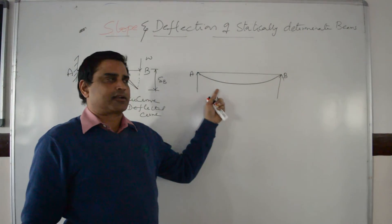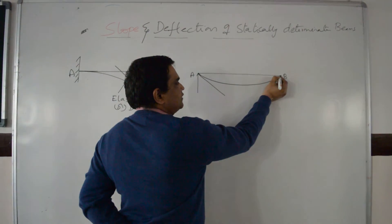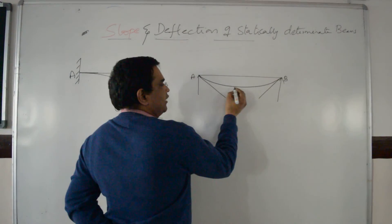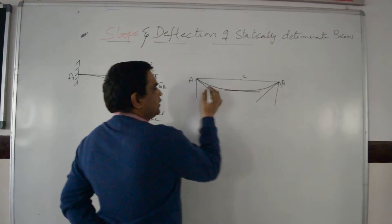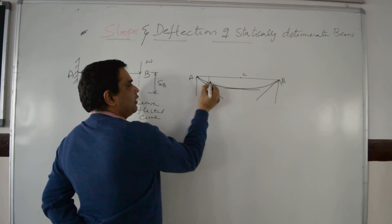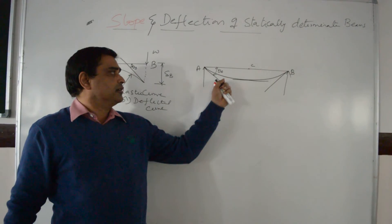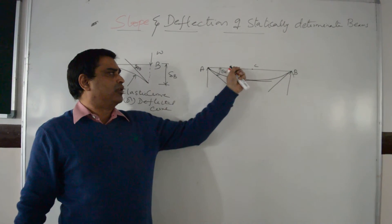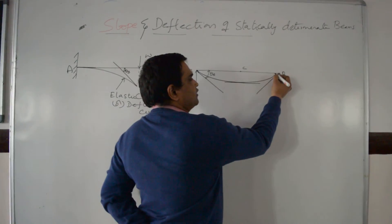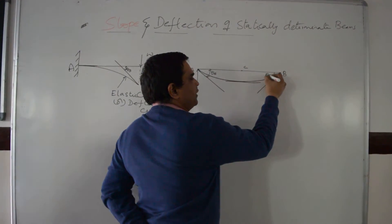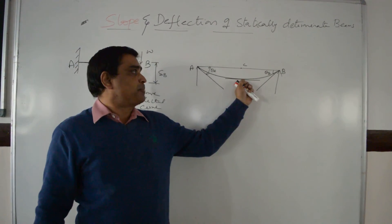This deflected shape is also called the elastic curve. Draw a tangent on the elastic curve at A, at B, and at midpoint C. Theta-A is the slope at A — the angle between the tangent on the elastic curve at support A and the axis of the beam. Similarly, theta-B is the slope at B. The tangent at the center is parallel to the axis of the beam, so there is no slope at the center.